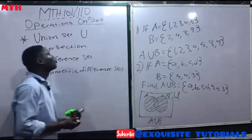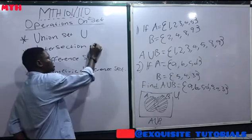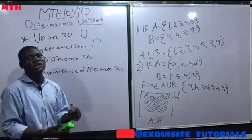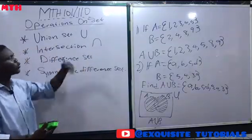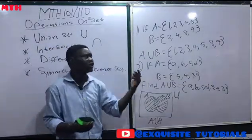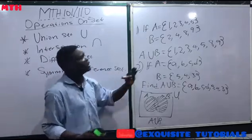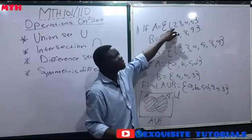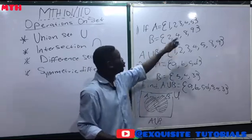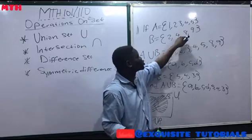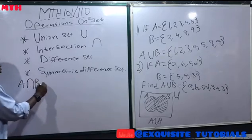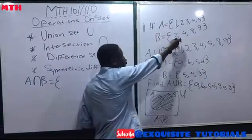Now let's move to the intersection of two sets, denoted as ∩. Remember, disjoint sets have nothing in common, and overlapping sets have something in common. The intersection of two sets A and B are those elements they have in common. For example, from set A = {1, 2, 3, 4, 5} and B = {2, 4, 8, 9}, we have 2 in both and 4 in both, so A ∩ B = {2, 4}.